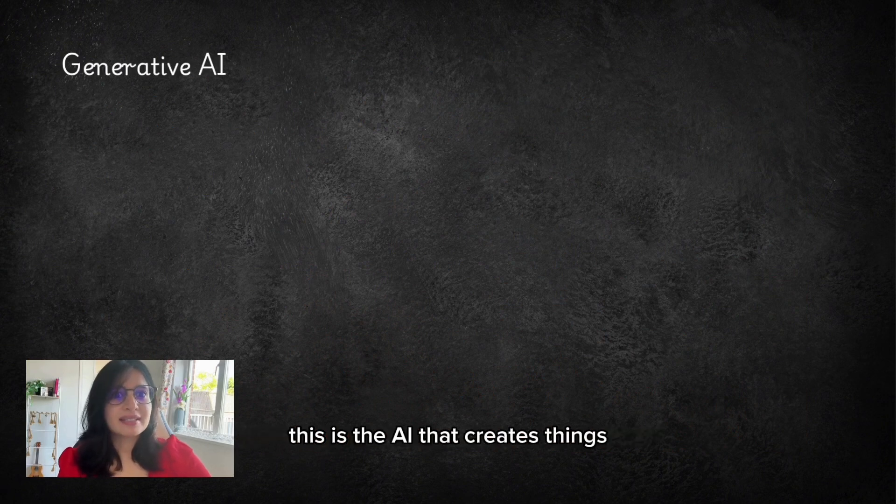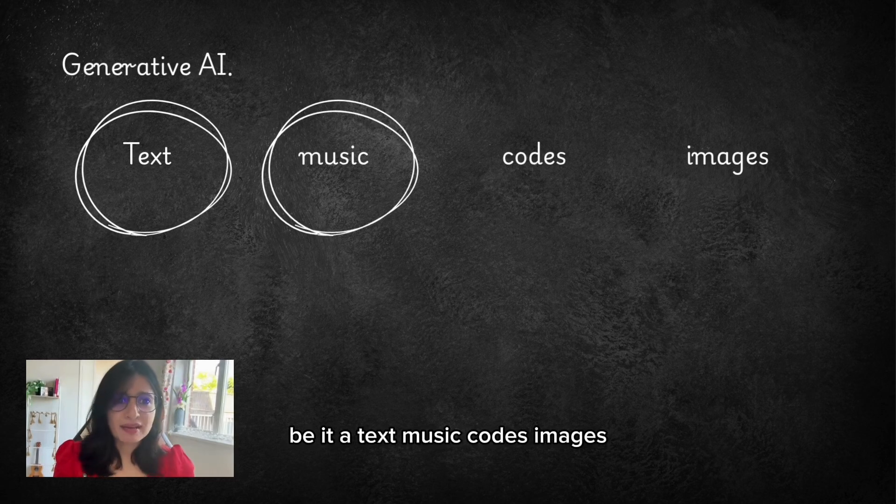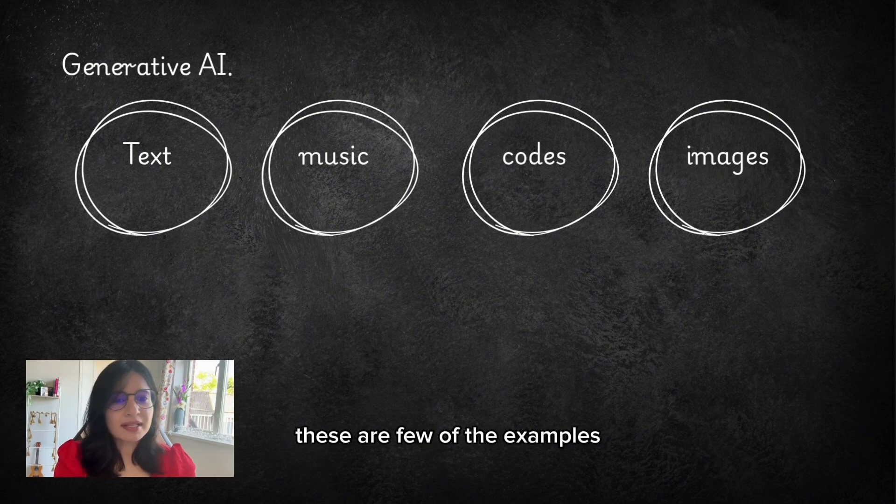Let's start with Generative AI. This is the AI that creates things, be it a text, music, codes, images. These are a few of the examples.